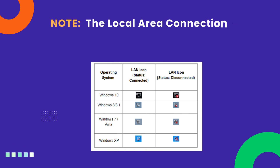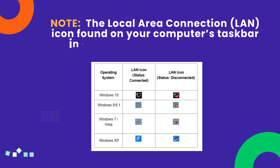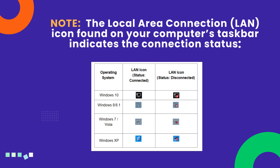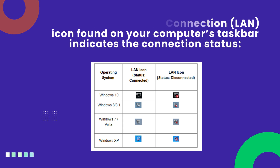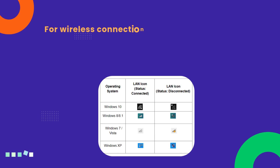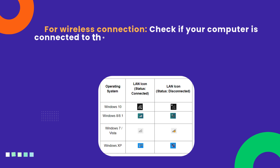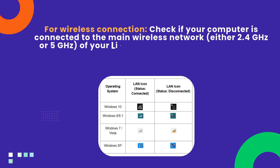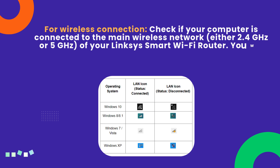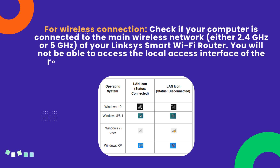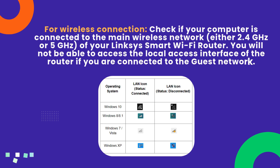Note: the local area connection icon found on your computer's taskbar indicates the connection status. For wireless connection, check if your computer is connected to the main wireless network, either 2.4GHz or 5GHz, of your Linksys smart Wi-Fi router. You will not be able to access the local access interface of the router if you are connected to the guest network.